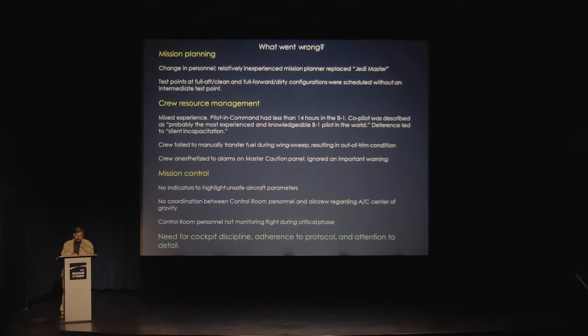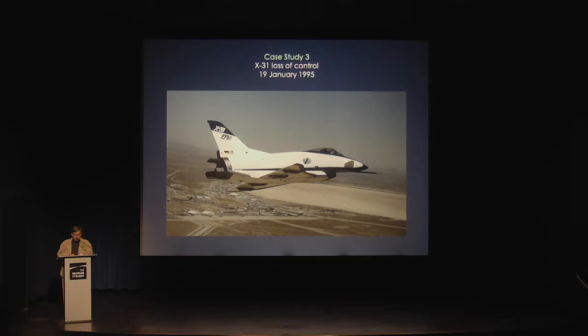The crew failed to manually transfer fuel during the wing sweep, resulting in a severe out-of-trim condition. Because the crew was anesthetized to alarms on the master caution panel, they ignored an important warning. There were no indicators to highlight unsafe aircraft parameters, and there was no coordination between control room personnel and the air crew regarding the aircraft's center of gravity. Additionally, control room personnel were not monitoring the flight during a critical phase of the mission. The most significant lesson was that there was a clear need for cockpit discipline, adherence to protocol, and attention to detail.